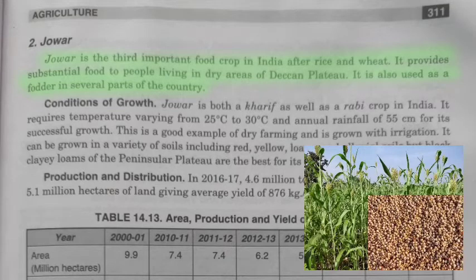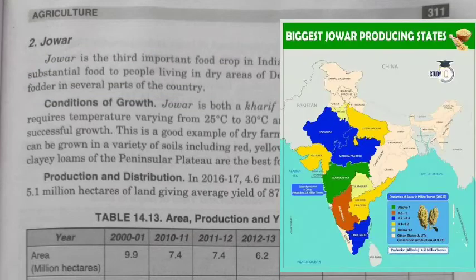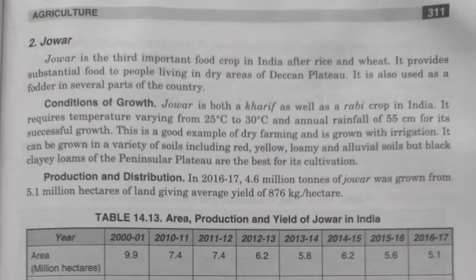Another important food crop is jowar, the third most important food crop after rice and wheat. It provides staple food for people in the Deccan Plateau and western parts of India, and also serves as fodder in several parts of the country. Jowar is grown both as a kharif and rabi crop, requiring a temperature of 25 to 30 degrees Celsius with an annual rainfall of 55 centimeters.